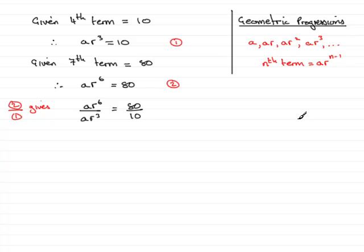Now we can cancel out the A's here, so we have A into A goes 1, and R cubed into R to the 6 goes R cubed times, so that would be R cubed equals 80 divided by 10 which is 8. So in order to get R, just need to take the cube root of 8, and the cube root of 8 is just simply R equals 2.